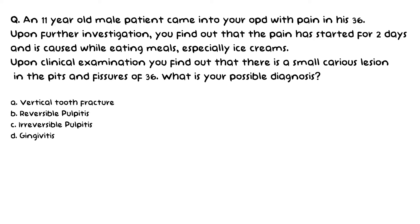Based on the information provided, there are 2 options that are most likely correct: vertical tooth fracture or reversible pulpitis. Gingivitis is completely wrong since the symptoms don't match. Irreversible pulpitis is also incorrect — it is more of a chronic condition and a sequel to reversible pulpitis. This patient gives a history of pain for just 2 days, suggesting an acute condition, and no radiographic findings are provided, making irreversible pulpitis less likely.